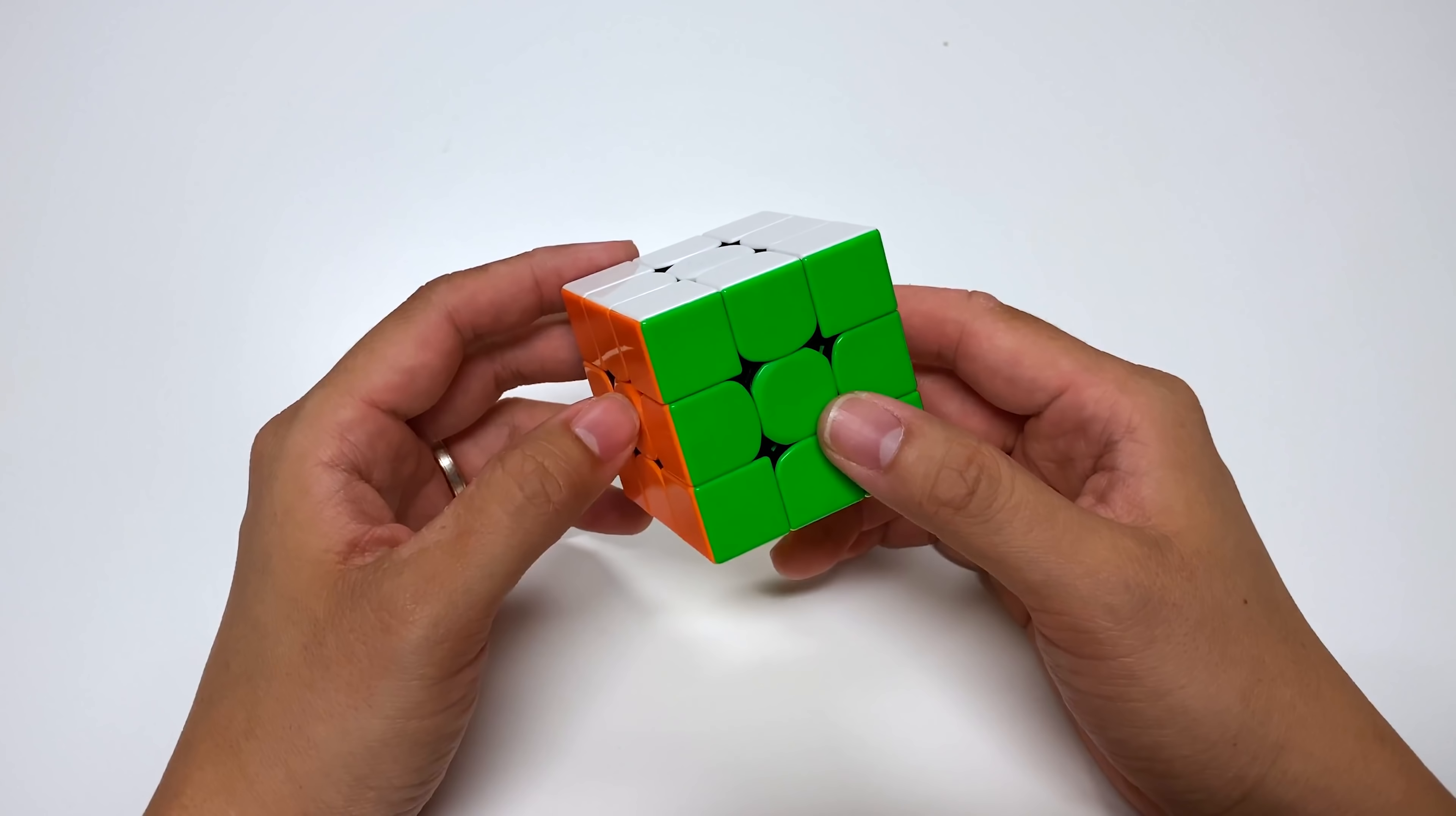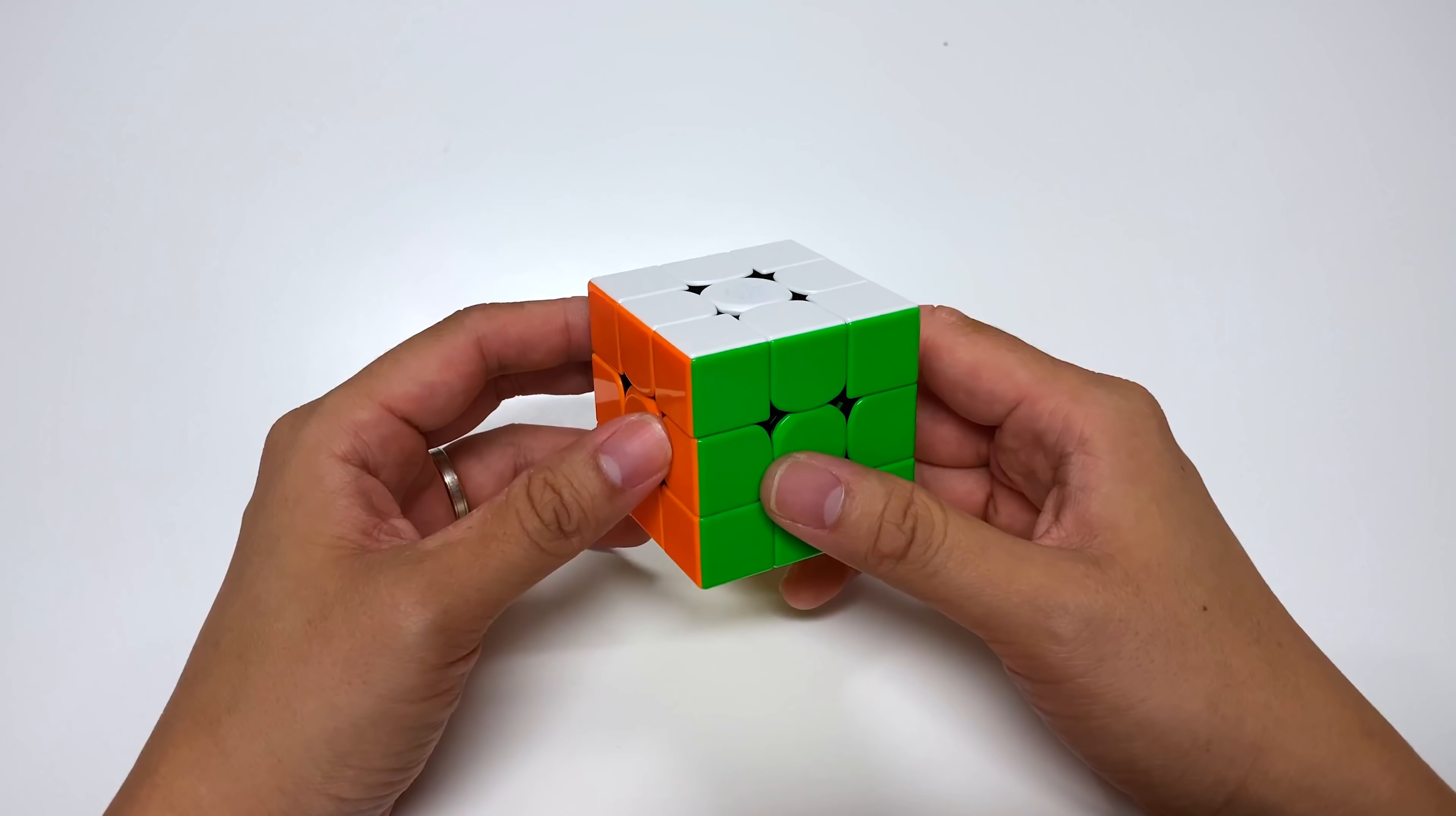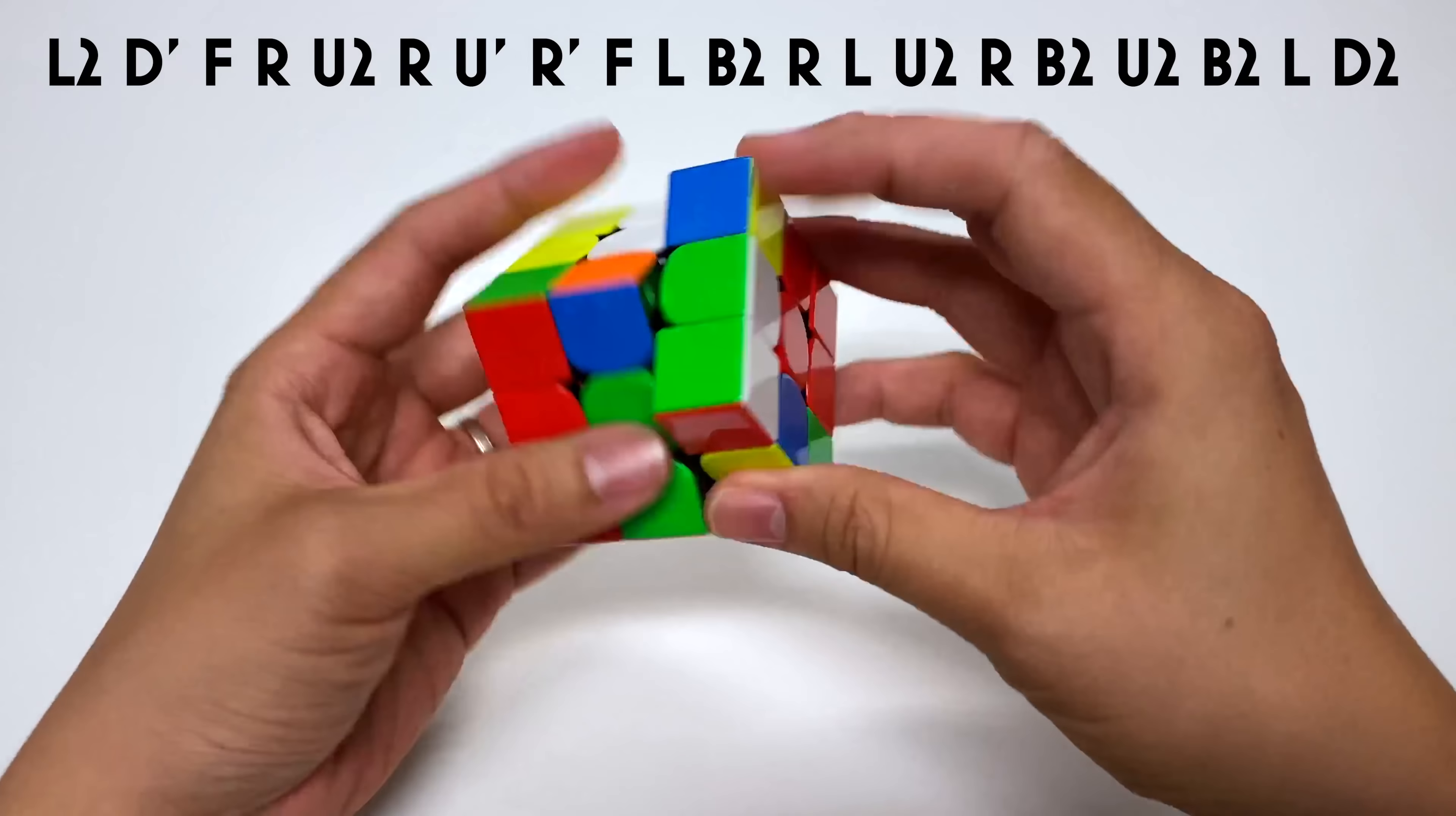But a bunch of you did ask if I could do a reconstruction. And if you think this might help you, then continue watching. So the scramble is just on the screen and it's this.